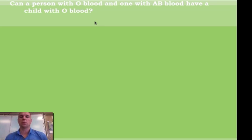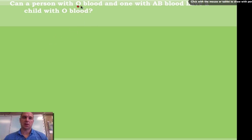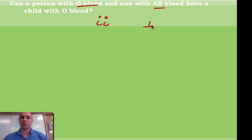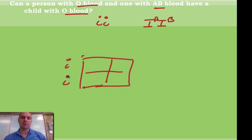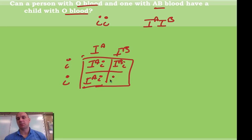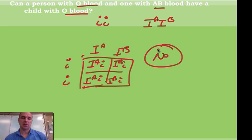Can a person with O and a person with AB have a child with O? O blood would be little i, little i. AB would be capital I-A, capital I-B. Even looking at this you can tell — doing the Punnett square, putting O on one side and AB on the other — they would have a child with A, A, B, or B. So can they have a child with O? Absolutely not.